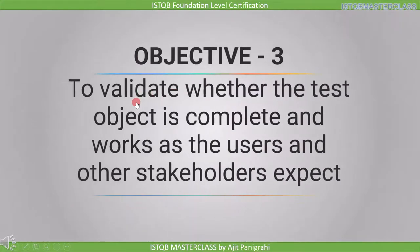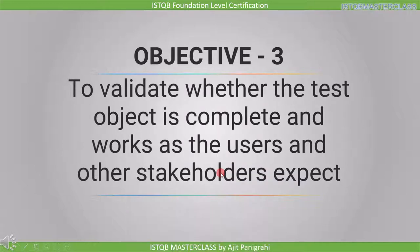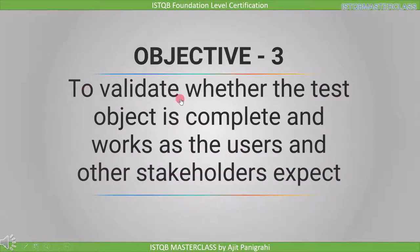The third objective is to validate whether the test object is complete and works as the user and other stakeholders expect. The test object is defined as the component or system to be tested. When we are in the requirement stage, requirement is our test object; in the design stage, design is our test object; and in the implementation stage, code is our test object. We need to provide input to the test object and check whether the output fulfills stakeholder requirements. Once the software is ready, we execute it to see if it fulfills the customer requirement — and since we are executing the code, this comes under validation.